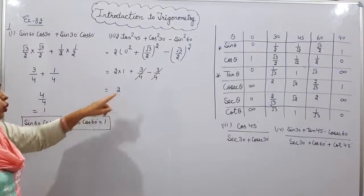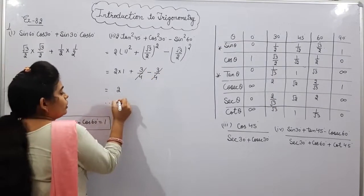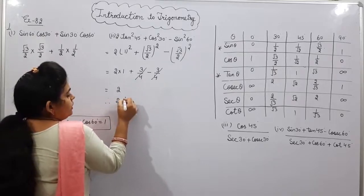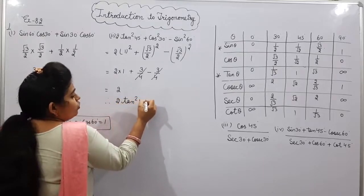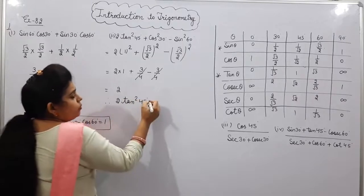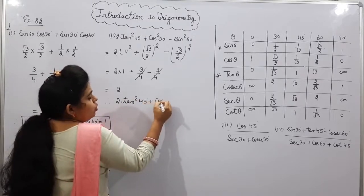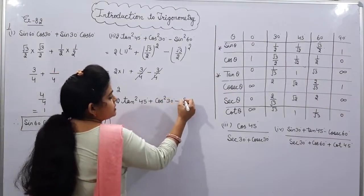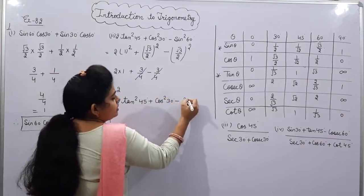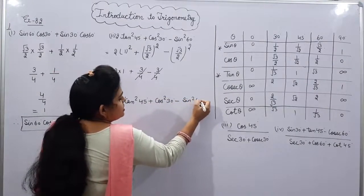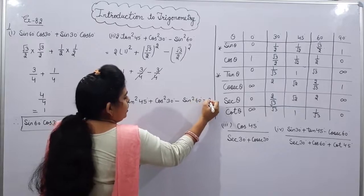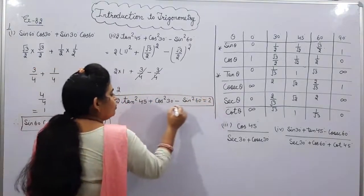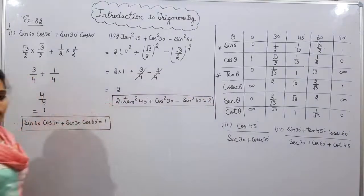So 3/4 minus 3/4 cancels out. What is left is 2. Therefore, 2 tan²45° + cos²30° − sin²60° = 2. This is the answer for Part 2.